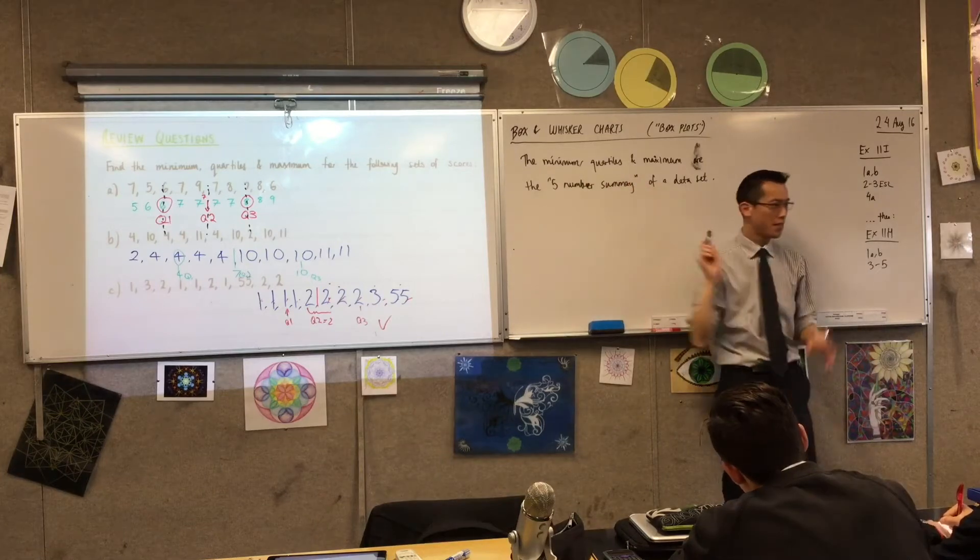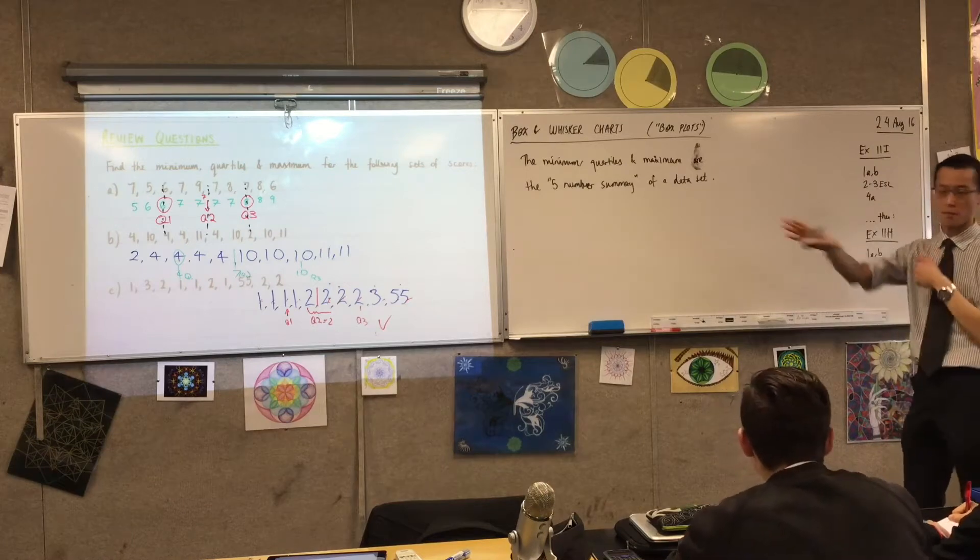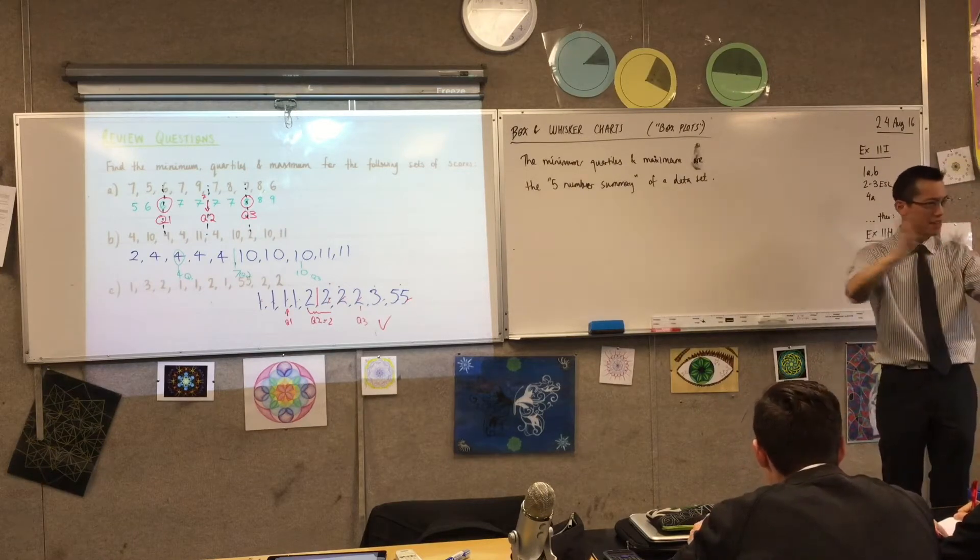When you put these five numbers together, they give you a really good idea, much better than just the mean or the median alone, of how the data sort of spreads out.